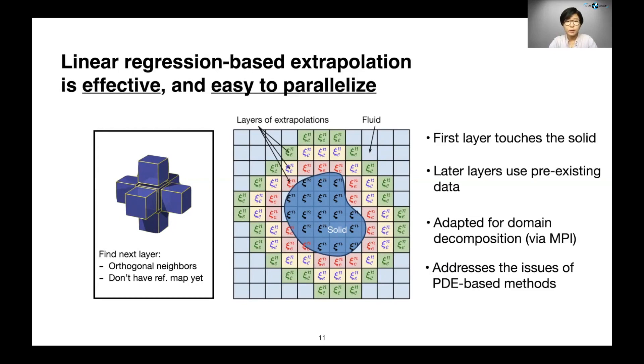This type of method is well adapted for parallelization via domain decomposition using MPI or other types of techniques. And this also addresses some of the issues raised by PDE-based methods. For example, in PDE-based methods, we need to define a normal vector and that becomes ambiguous when our solids have a sharp corner. But in this type of linear regression-based methods, we don't need to worry about that.